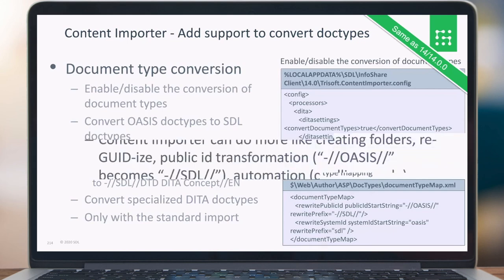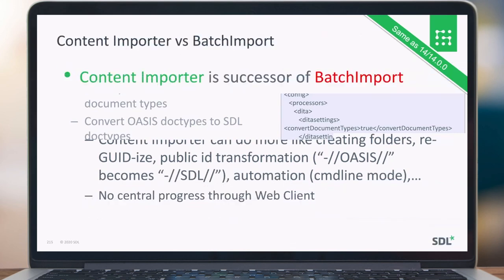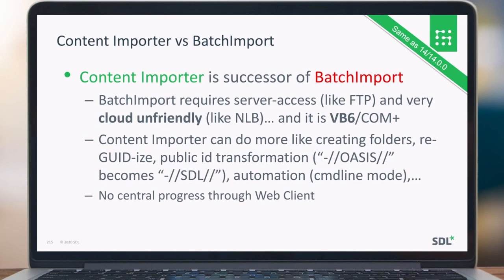The content importer is the successor to the Best Import tool. The Best Import required direct server access via FTP, was not cloud-friendly, and still used VB6 and COM+. One of our goals is to eliminate VB6 and COM+ from Trillion Docs, and this is a major step in that direction. Content Porter can do more, such as creating folders and public ID transformations. Previously there was no central progress view in the web client, but now the content importer shows you the progress of the import as it runs.